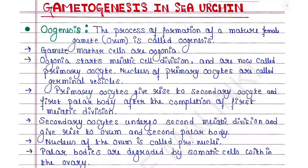First is oogenesis — the process of formation of a mature female gamete, that is ovum, is called oogenesis. Gamete mother cells are oogonia. Oogonia start meiotic cell division and are now called primary oocytes. The nucleus of primary oocytes is called germinal vesicles. Primary oocytes give rise to secondary oocyte and first polar body.